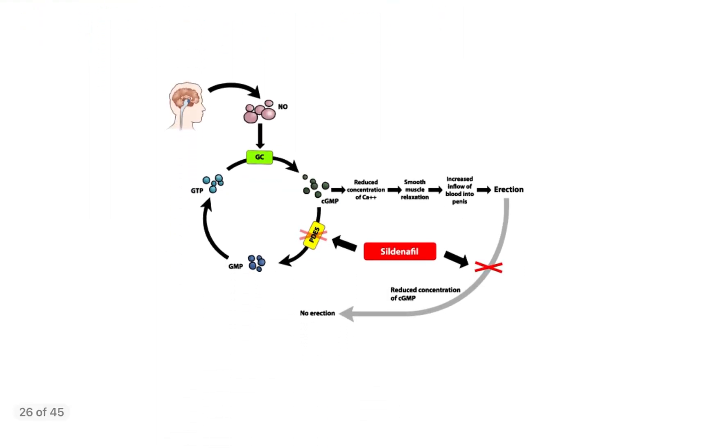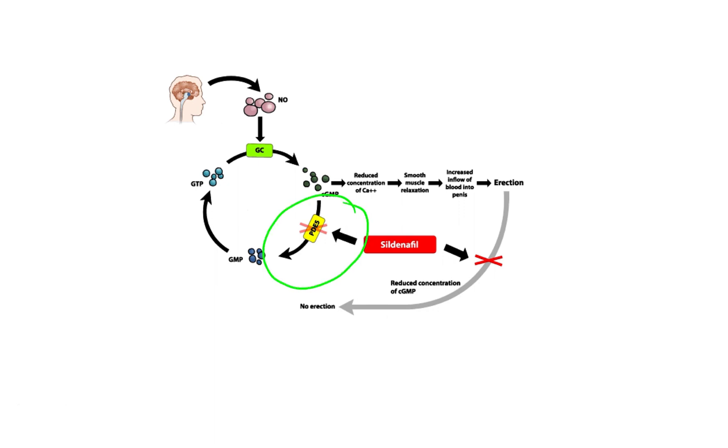Sildenafil inhibits, as you can see here, PDE5 or phosphodiesterase 5 enzyme. By inhibiting phosphodiesterase enzyme is increased the level of cGMP, which reduce the concentration of calcium and followed by smooth muscle relaxation that increase the flow of blood into the penis and that causes erection. This is the mechanism of action by inhibiting phosphodiesterase enzyme.